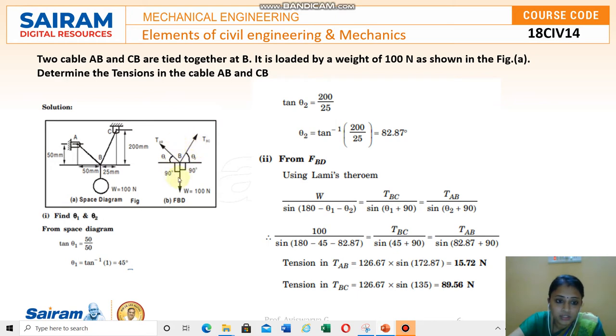Now after finding this theta, you have got the value for W. Now you have to find TAB and TBC. From the FBD, using Lami's theorem, we know that Lami's theorem means force by sine of the angle between other two forces. The force is W. What is the angle between other two forces? Just write sine. This pole is 180 degree minus theta 1 minus theta 2. You will get the value of this theta, this angle in the B.